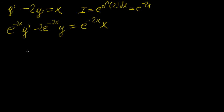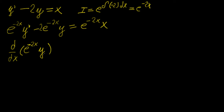Looking at the left hand side, if you remember the rules of differentiation, you can notice that you can use the product rule in reverse to simplify it. You can write this as d/dx [e^(-2x) · y], because differentiating that expression applies both the product and chain rules together, reproducing the left hand side. The right hand side remains e^(-2x) · x.